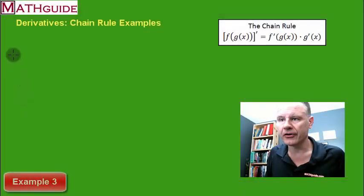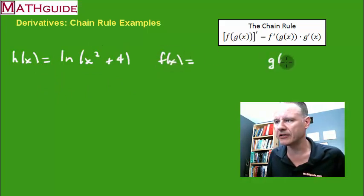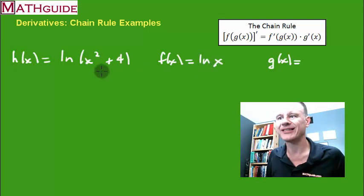Here's our third example. h of x is equal to the natural log of x squared plus 4. I'm going to find the derivative. Before we find the derivative, let's separate this into a composition of functions. I have the natural log of something. What is the something? x squared plus 4.